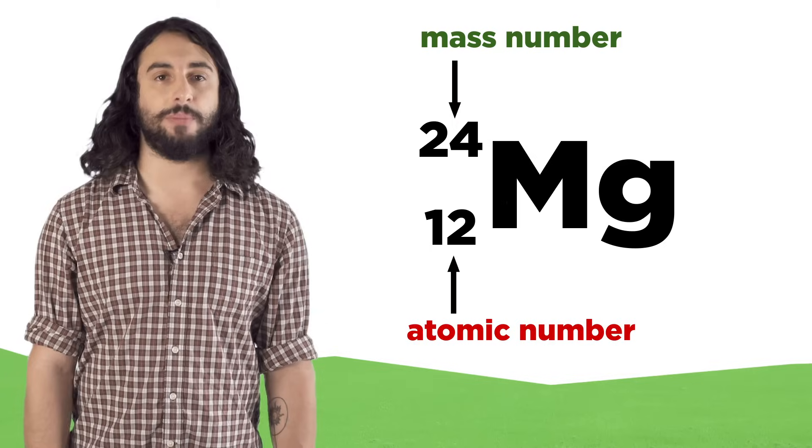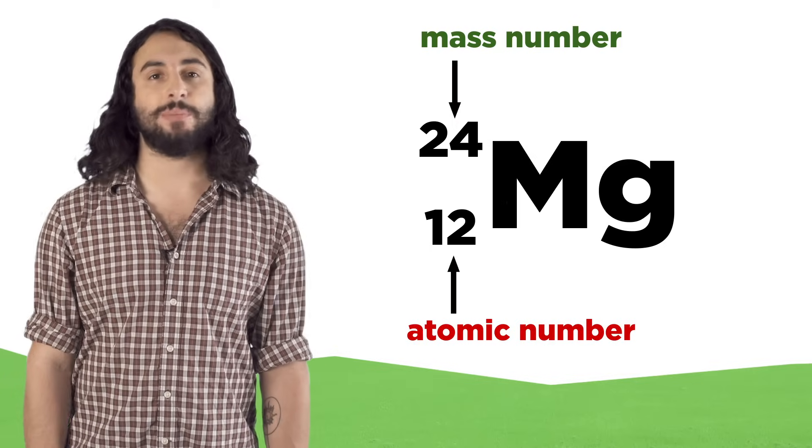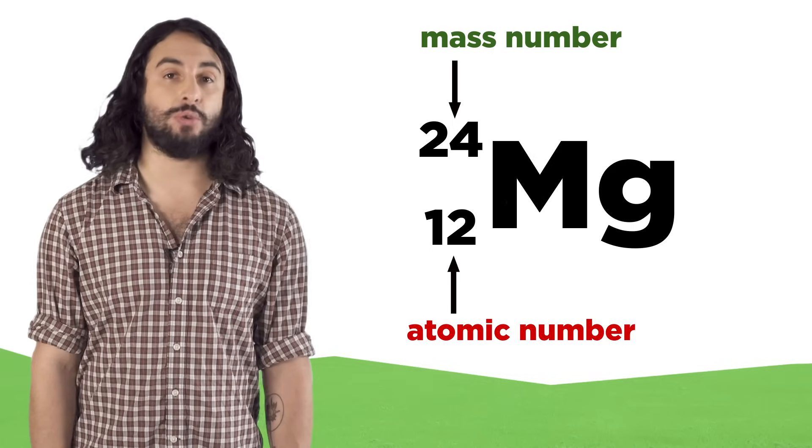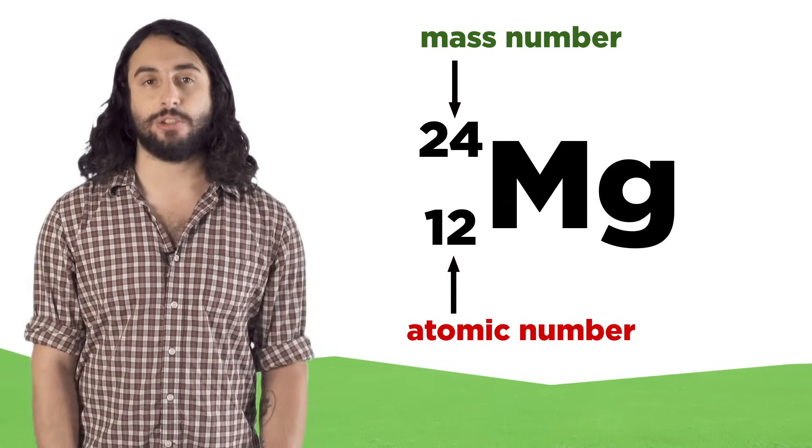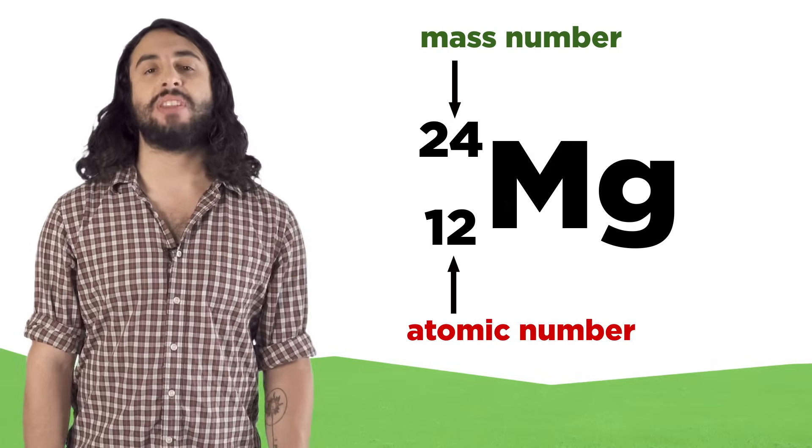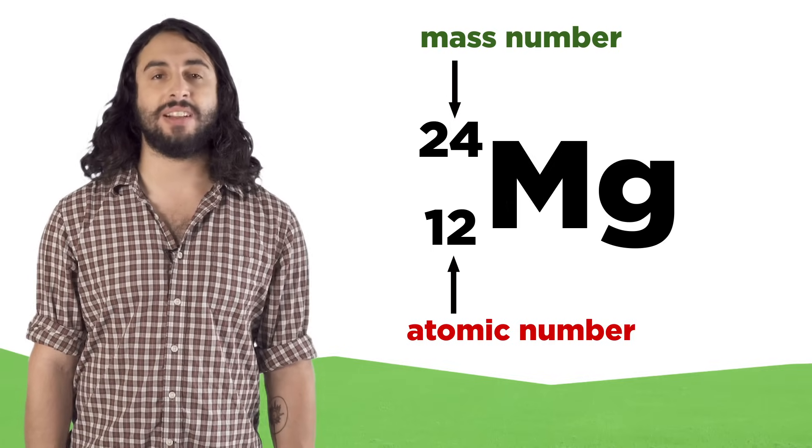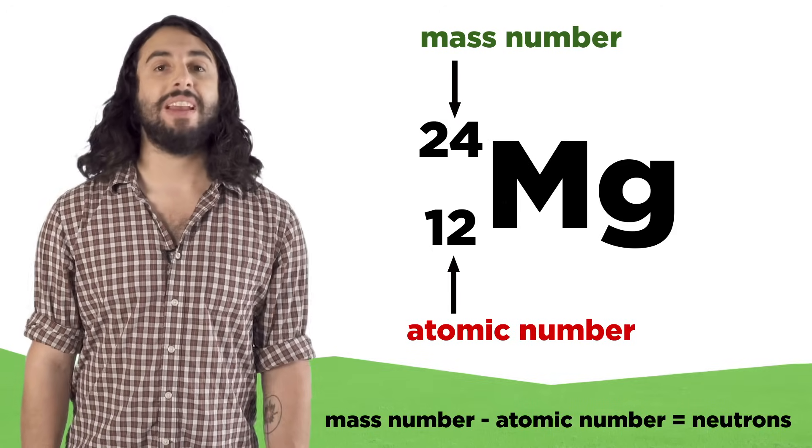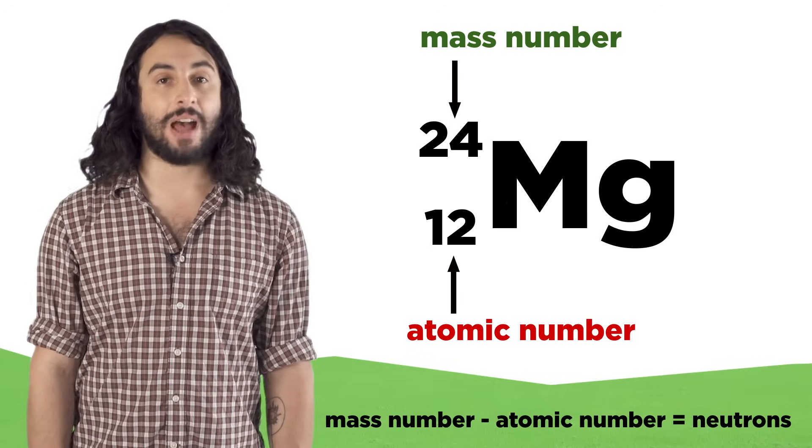To the upper left is the mass number. This is not redundant because atoms of a given element can have different masses due to differing numbers of neutrons. These are called isotopes of a given element. Remember that the mass number is the number of protons plus the number of neutrons, which means that the number of neutrons in an atom is the mass number minus the atomic number.